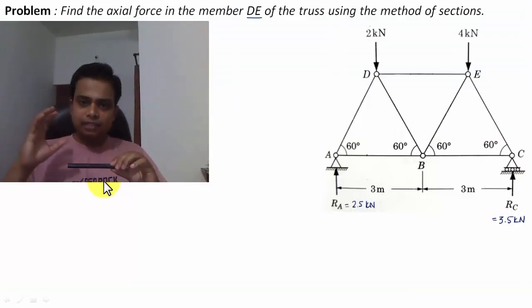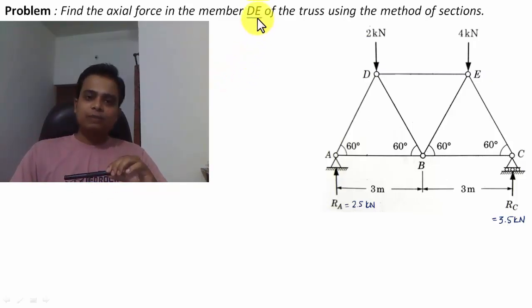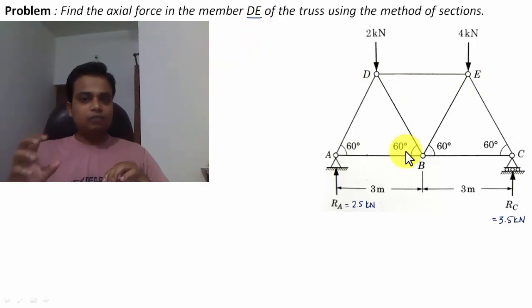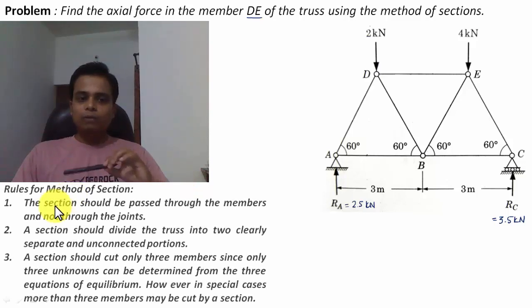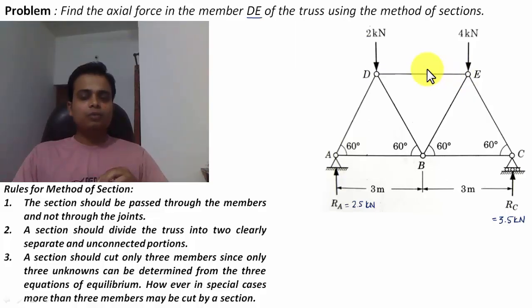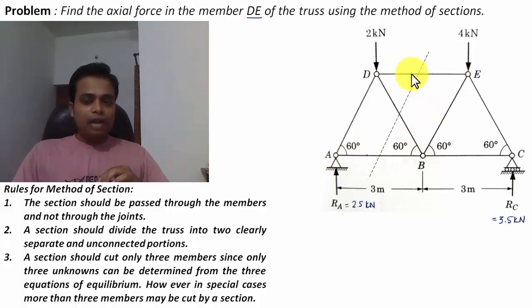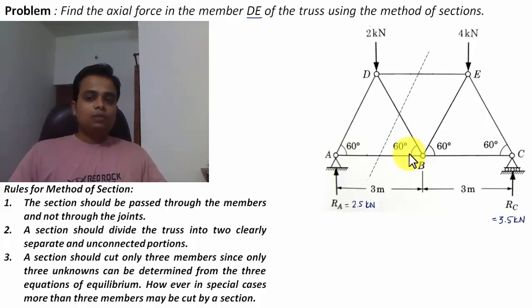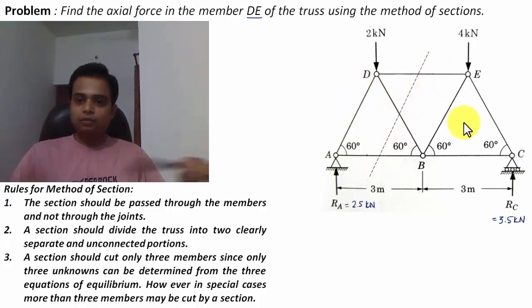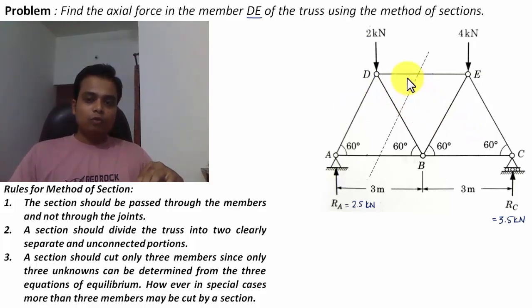Now that we've calculated the reactions at supports, we'll find the axial force in member DE using the Method of Sections. Rule Number One: the section should be passed through the members and not through the joints. So we pass a section through member DE, which also cuts through members DB and AB. Rule Number Two: the section should clearly divide the truss into two separate portions — one to the left and one to the right.